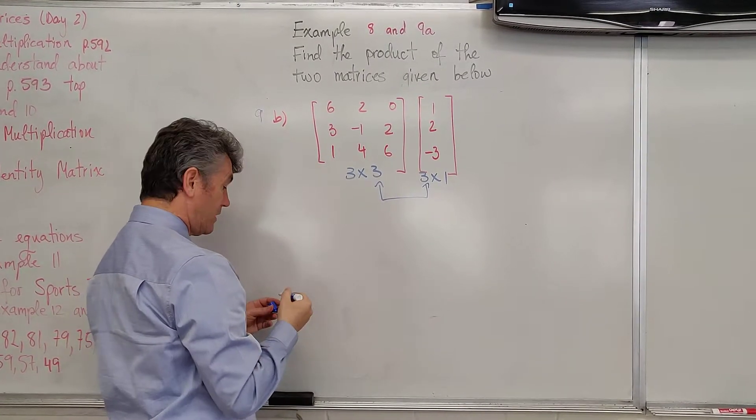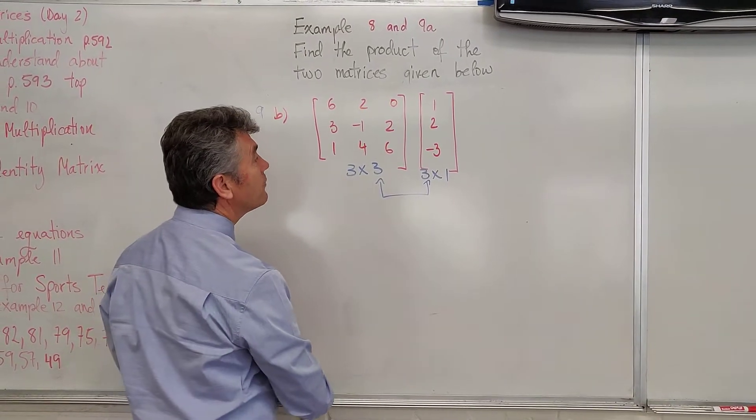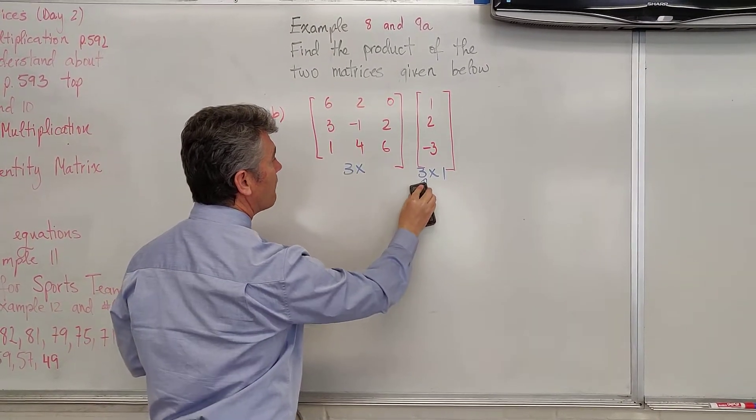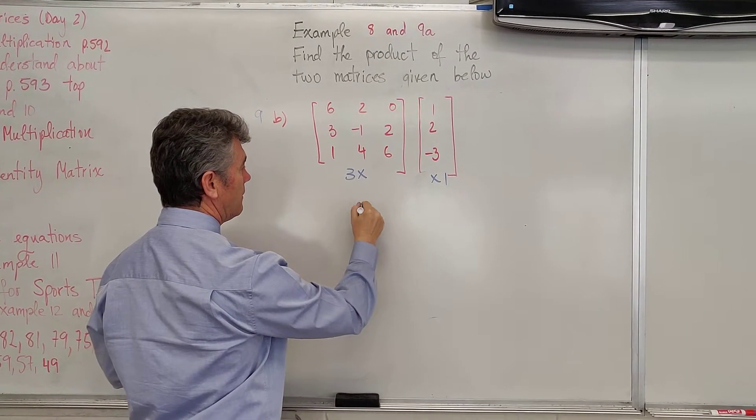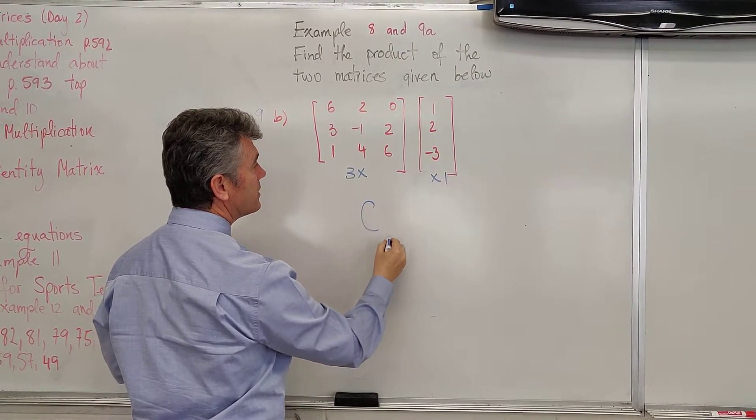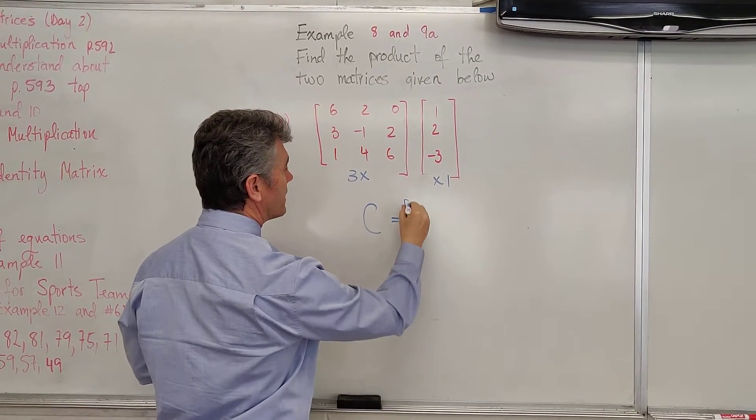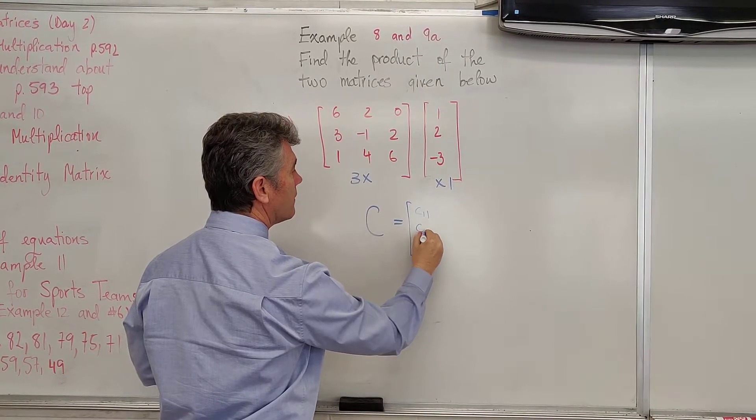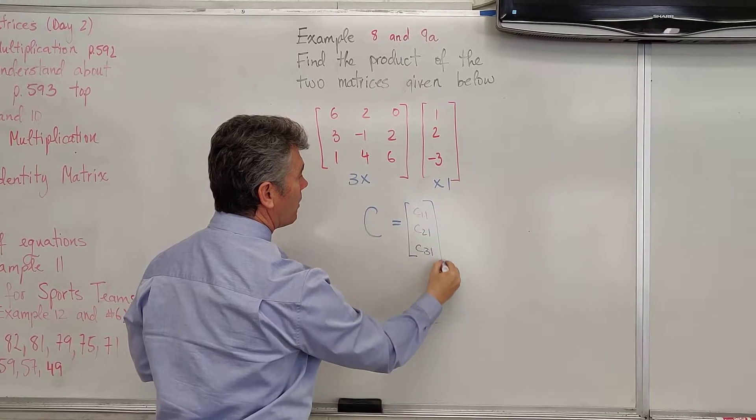So, because the middle dimensions match, it means that the product exists, and we can find it. Erase the middle dimensions. And your C, matrix C, is going to be a three by one matrix. So, three rows, but only one column.